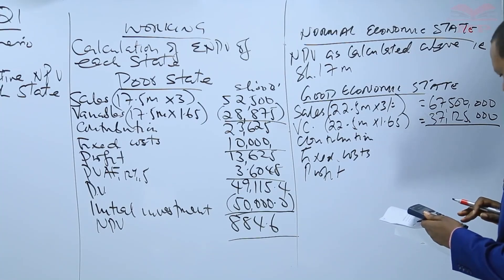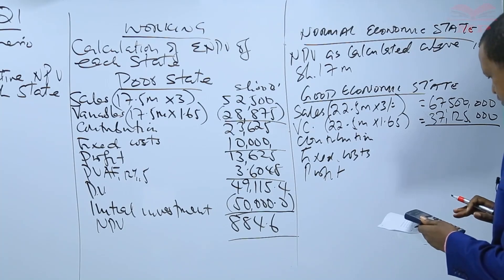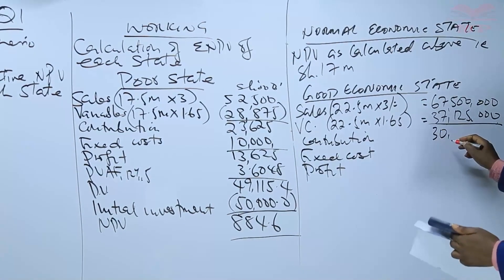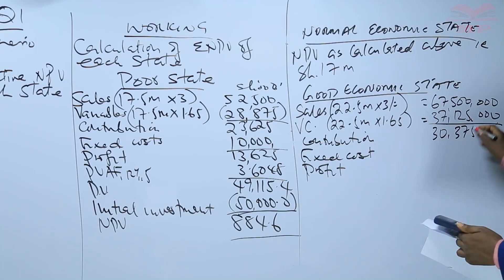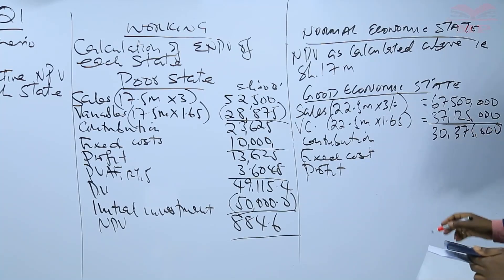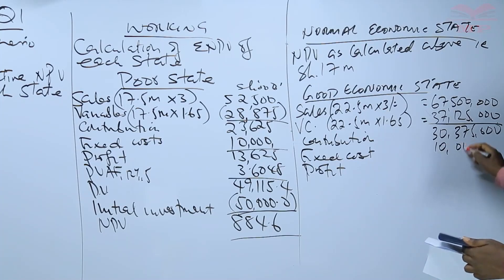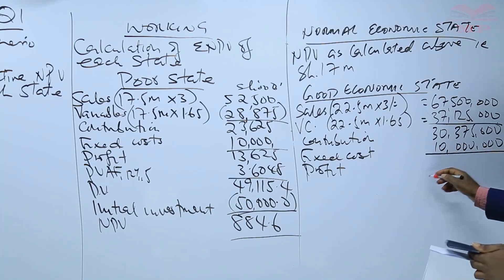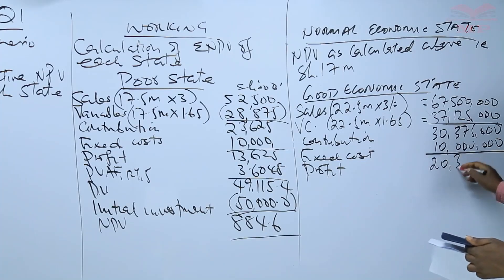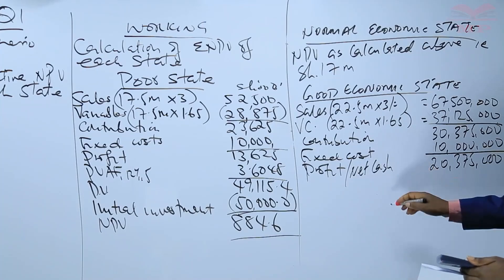The difference gives us 30,375,000. Deducting the fixed cost of 10 million, the profit is 20,375,000. This profit, or net cash inflow, is a future value so we discount it.